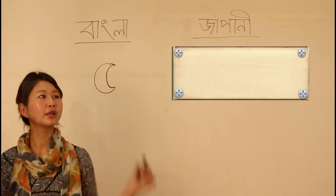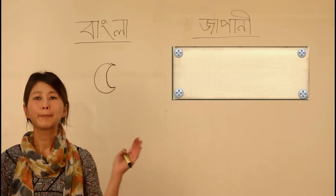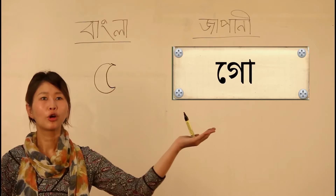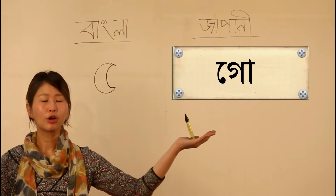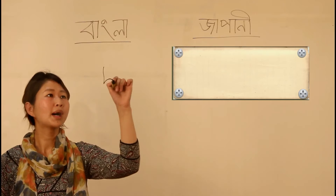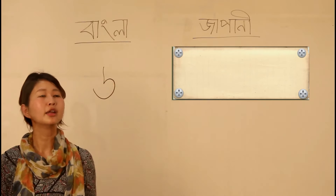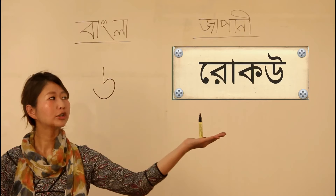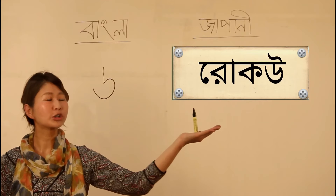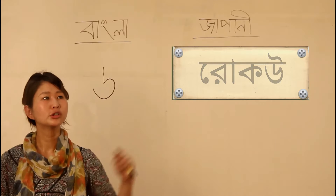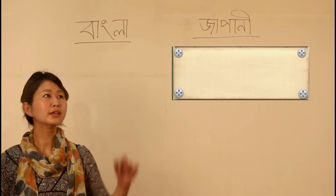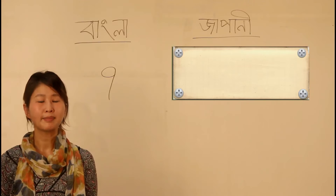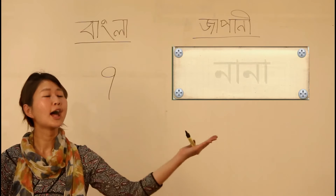Bangla is 5. Japanese is 5. Japanese is 6. Bangla is 6. Japanese is 7.